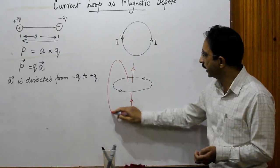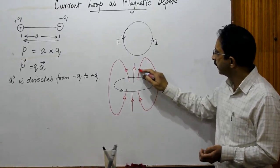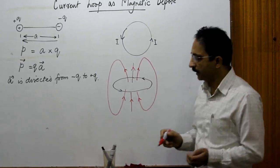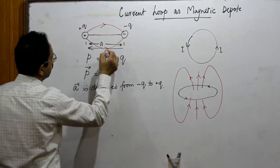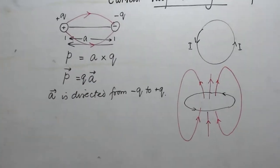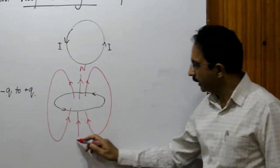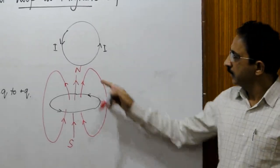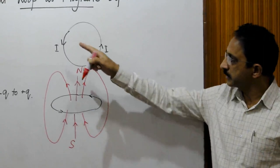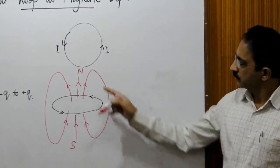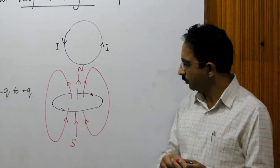The magnetic field lines of this current loop are analogous to the electric field lines of a dipole, where electric lines arise from the positive charge and fall to the negative charge. Similarly, the end from which magnetic lines rise is called the north pole, and the end into which magnetic lines enter is called the south pole. The north pole functions like a positive charge in electrostatics, and the south pole like a negative charge. So we sometimes call N a positive magnetic charge and S a negative magnetic charge.